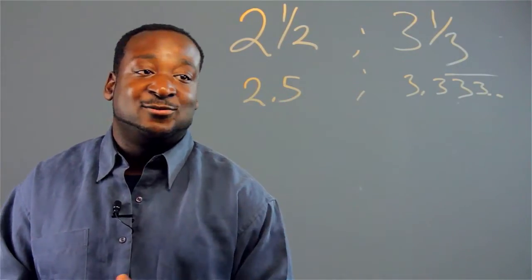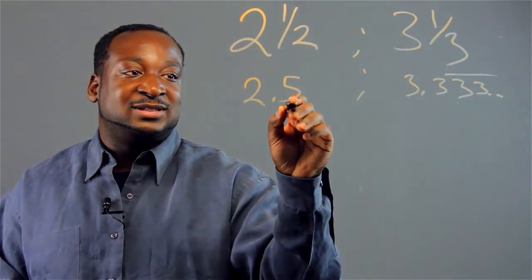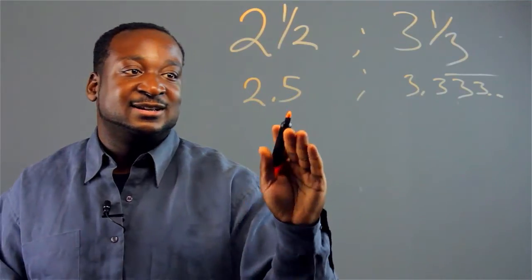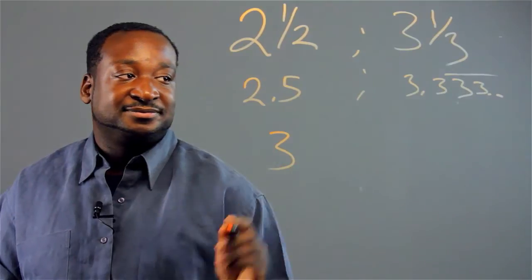Now if it's a 5 or better, you want to round up, and rounding up you just change this to a 0 and add 1 to the number in the ones place. So when we round up, we get 3.